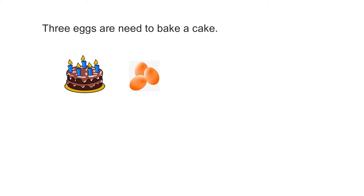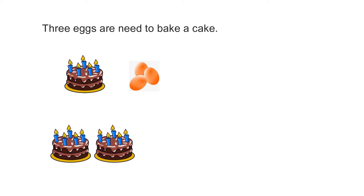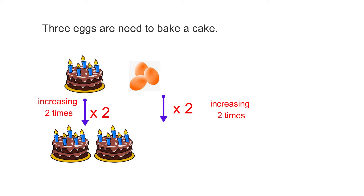How many eggs are needed to bake two cakes? One cake needs three eggs. To find the number of eggs for two cakes, we need to multiply. Two multiplied by three — we need six eggs.